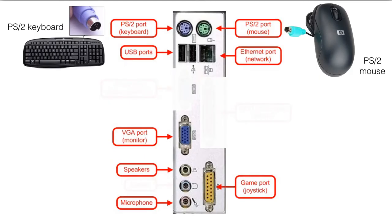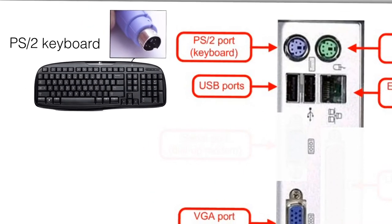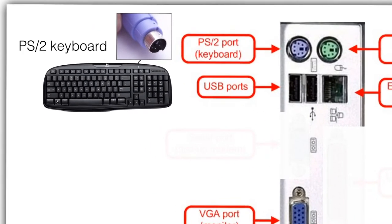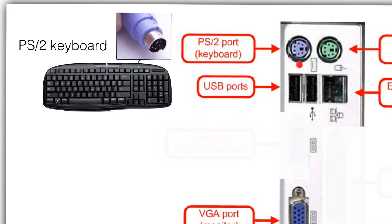Next we have the keyboard port, which is the purple one — this circular keyboard port. If you zoom in to get a better view, this is also a PS2 port but usually in a purple color representing that it is for a keyboard. The PS2 keyboard is now fading out and has been replaced by the USB keyboard.